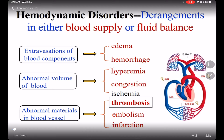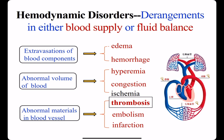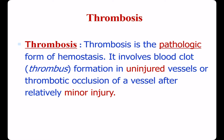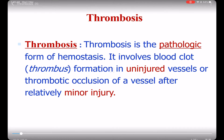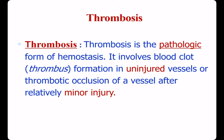Now start to learn the next part: thrombosis. It belongs to abnormal materials in blood vessel. Thrombosis is the pathologic form of hemostasis. It involves blood clot. Thrombosis formation in uninjured vessel or thrombotic occlusion of a vessel after relatively minor injury.